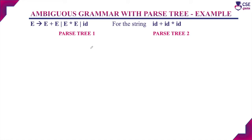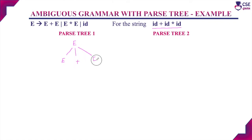Here we will construct two different parse trees for deriving the same string id + id * id. The parse tree starts with the start symbol E. First, we apply the production E → E + E. For the first non-terminal E, we apply the production E → id, and for the second non-terminal E, we apply the production E → E * E.